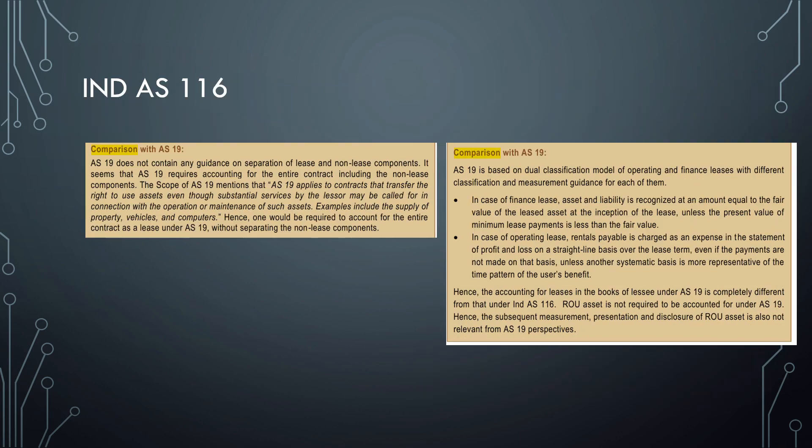Next one is IND AS 116. AS 19 is not giving any guidance on separation of lease and non-lease components. Those who have given the exam in last November would have encountered this - the lease and non-lease components question came. This is a very important question. AS 19 does not talk about the separation of lease and non-lease components, whereas another key difference is AS 19 is based on dual classification model of operating and finance lease with different methods of measuring for each class of items. In case of finance lease, asset and liability is recognized by an equal amount at fair value. The accounting for lease in the books of lessee under AS 19 is completely different. The right-of-use asset is not required to be recorded under AS 19, so the subsequent measurement and presentation and disclosure is not at all relevant from AS 19 perspective. I hope all of you understood the question. Do your groups and make you have the best vision at the test of time.